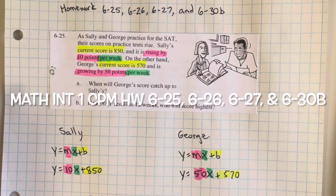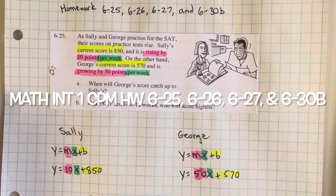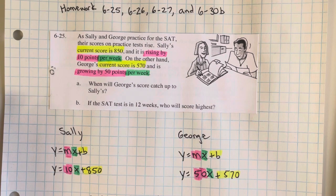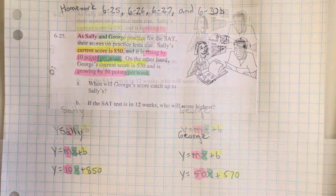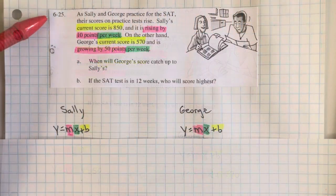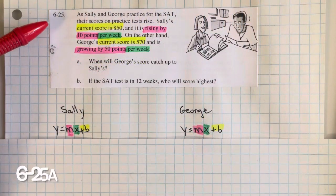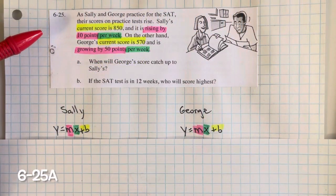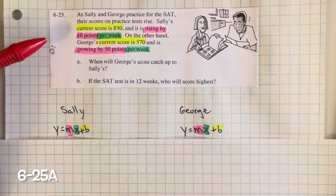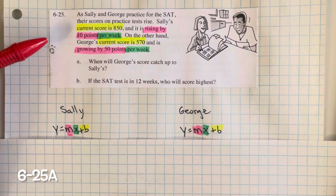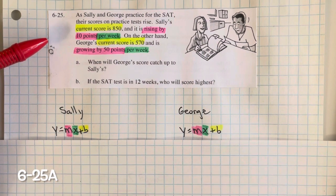This is the homework for 625, 626, 627, and 630B. For 625, as Sally and George practiced for the SAT, their scores on practice tests rise.